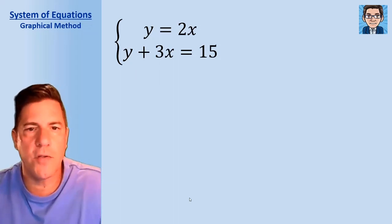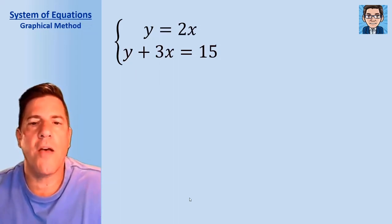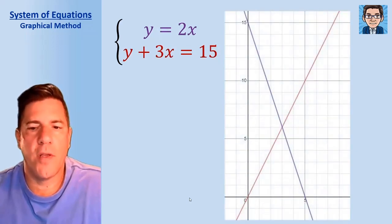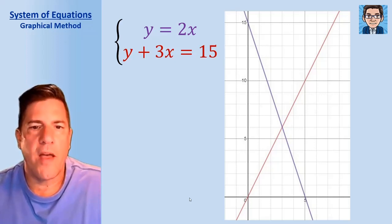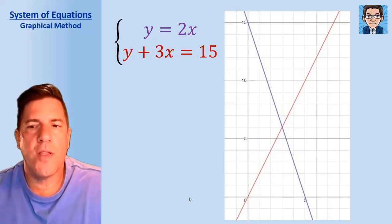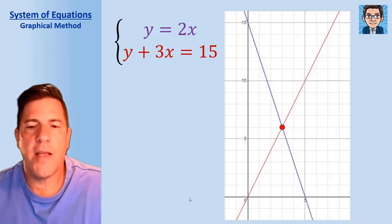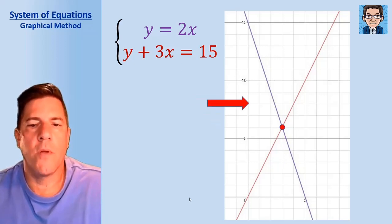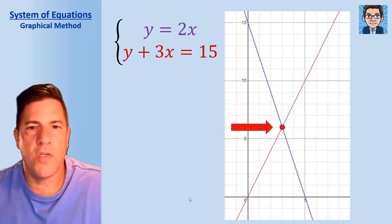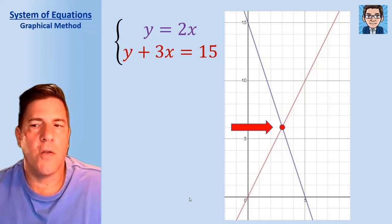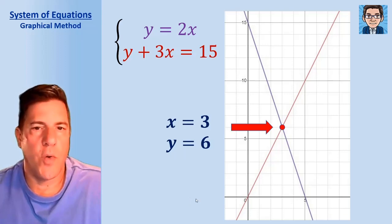Let's take a look first at the graphical solution of a system of equations. If we were to graph these two lines — the first one graphed in purple and the second one graphed in red — every point on the purple line will make the first equation true, and every point on the red line will make the second equation true. But there's only one point that's going to make both equations true, and that's the point where they intersect. So this particular solution would be x equals 3 and y equals 6, and that makes both equations true.